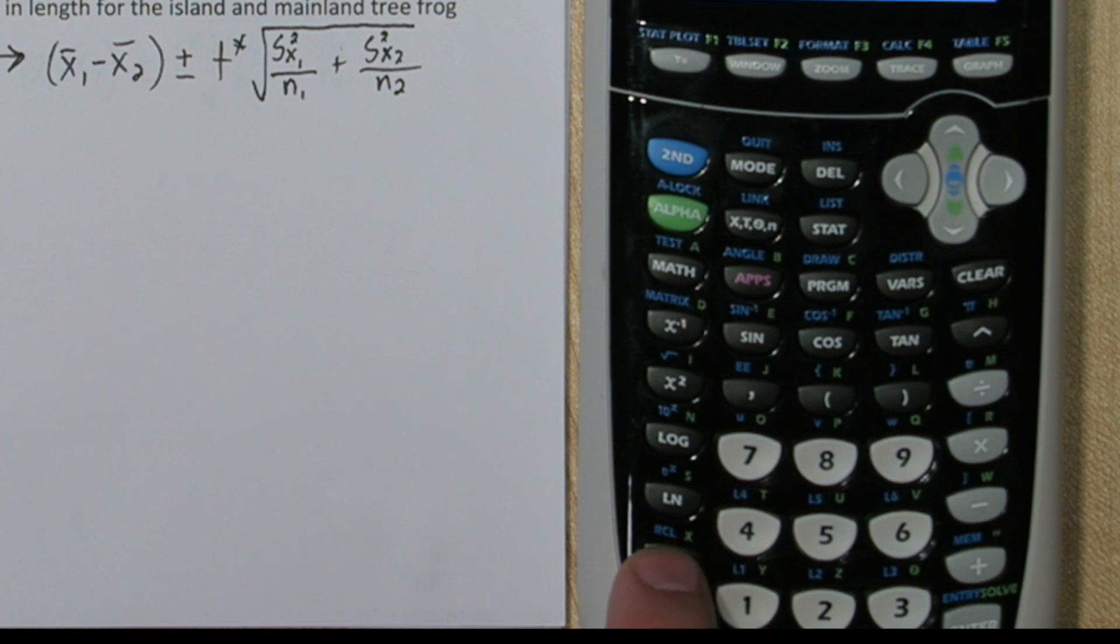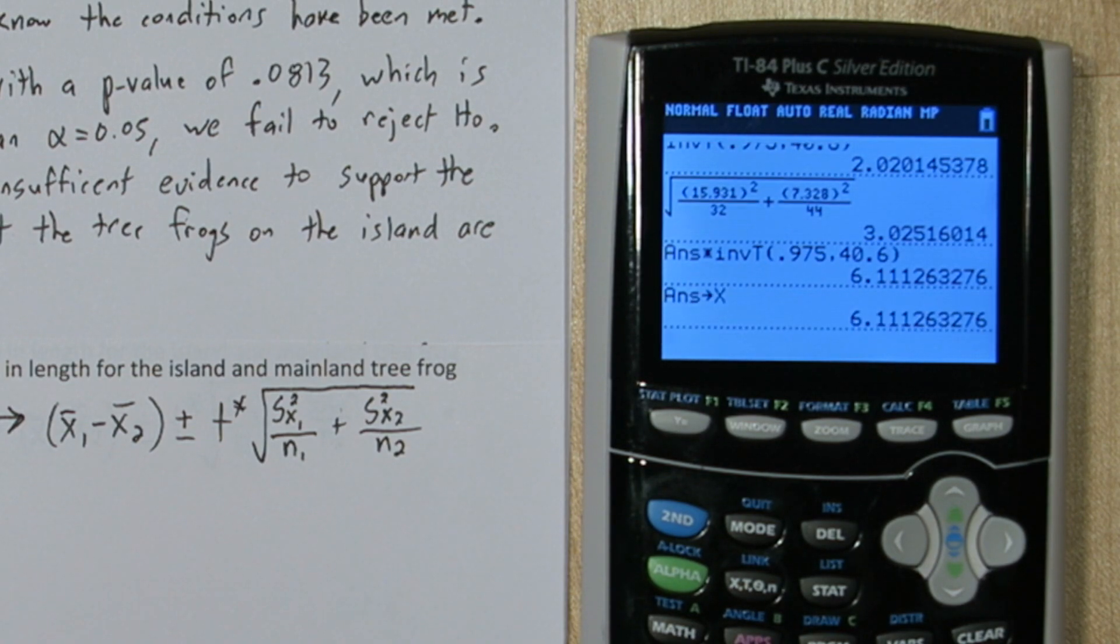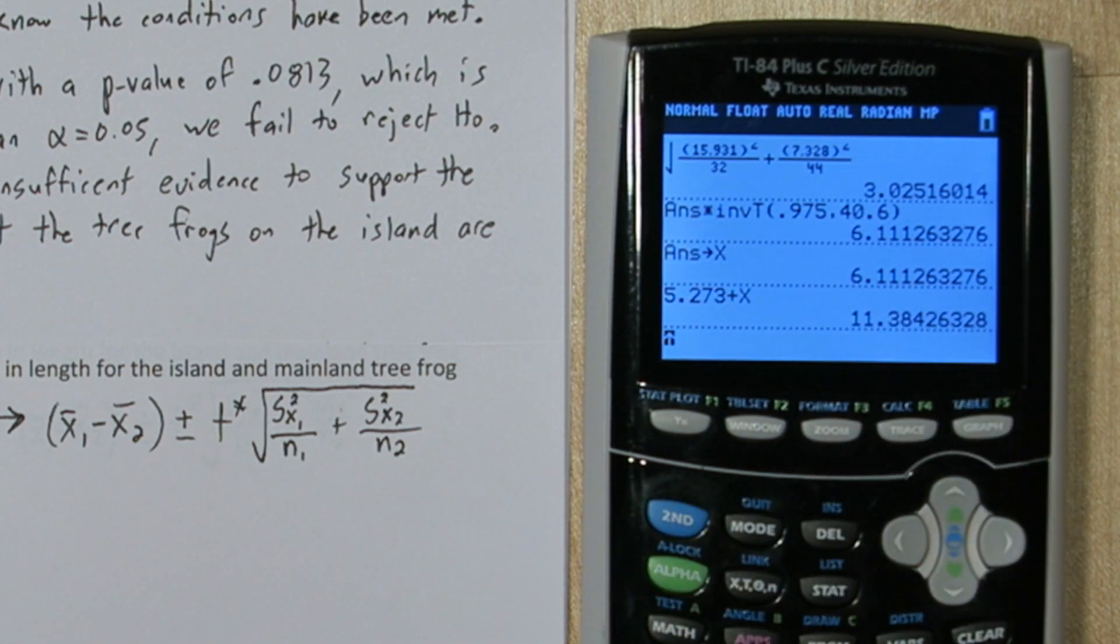Now on the calculator, I'm going to press this STO button at the bottom, store, and I'm going to store this margin of error as x. So now if I type my point estimate, I can add x to get the upper end of our confidence interval and subtract x to get the lower end of our confidence interval.